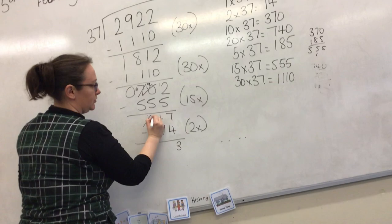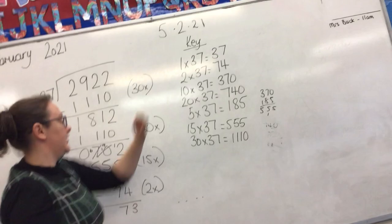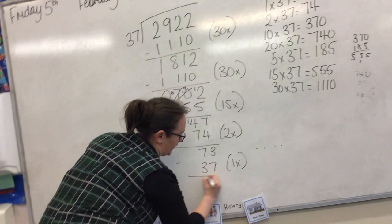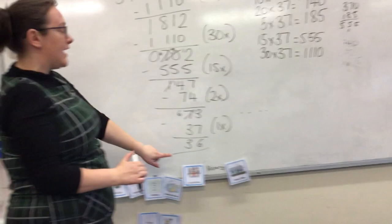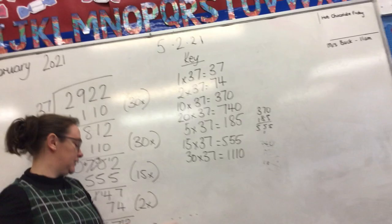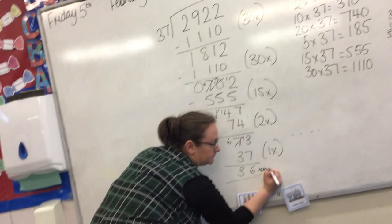So 7 take 4 is 3, 4 take 7 I can't do. Then I'm going to take off 37, which is 1 times. So 3 take 7, we're going to exchange - 13 take 7 gives us 6, and 6 take 3 leaves us with 3. I can't take any more off now, so that is our remainder.